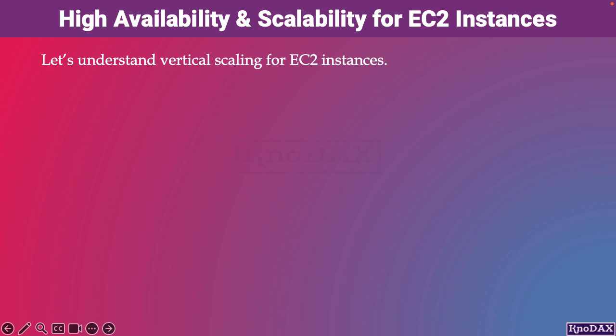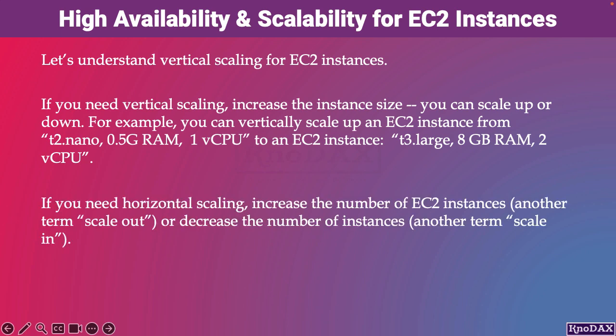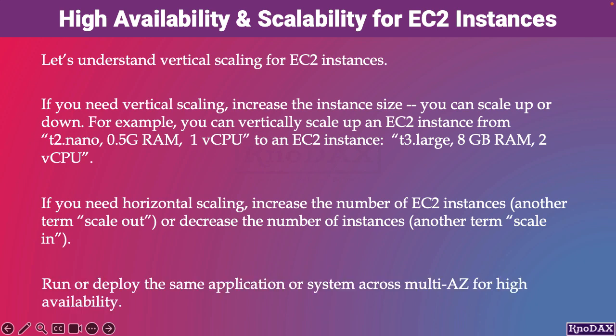For EC2 instances: if you need vertical scaling, increase the instance size — you can scale up or down. If you need horizontal scaling, increase the number of EC2 instances, also called scale out, or decrease the number of instances, also called scale in. For high availability, run or deploy the same application or system across multi-AZ.